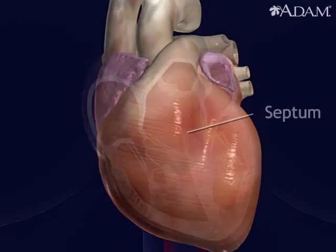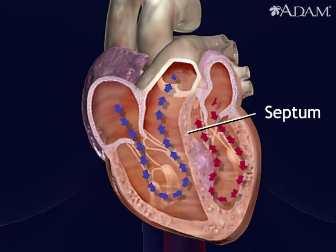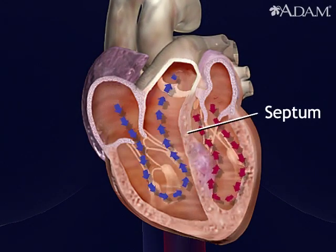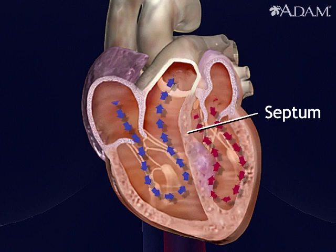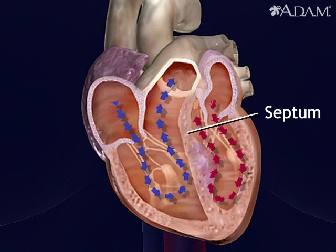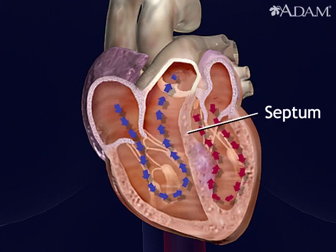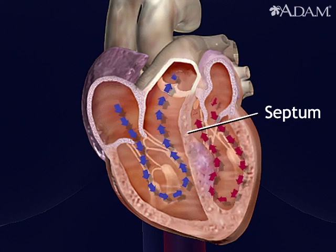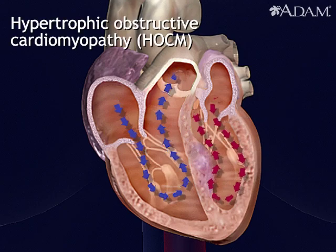Cardiomyopathy refers to heart muscle disease. Here, a diseased section of wall that separates the heart chambers that pump blood out partly blocks the flow through one of them. The condition is called hypertrophic obstructive cardiomyopathy.